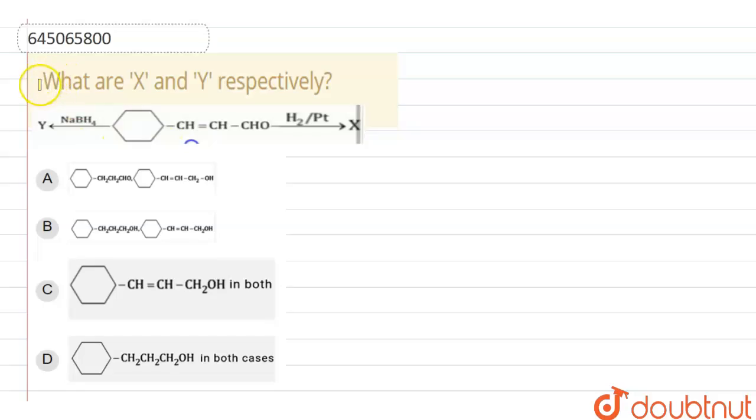Hello everyone, in this question, what are X and Y respectively? So we have to find out what is the X component formed by this and what is the Y component formed by this same reactant. When it will react with two different reagents, it will give two different products.